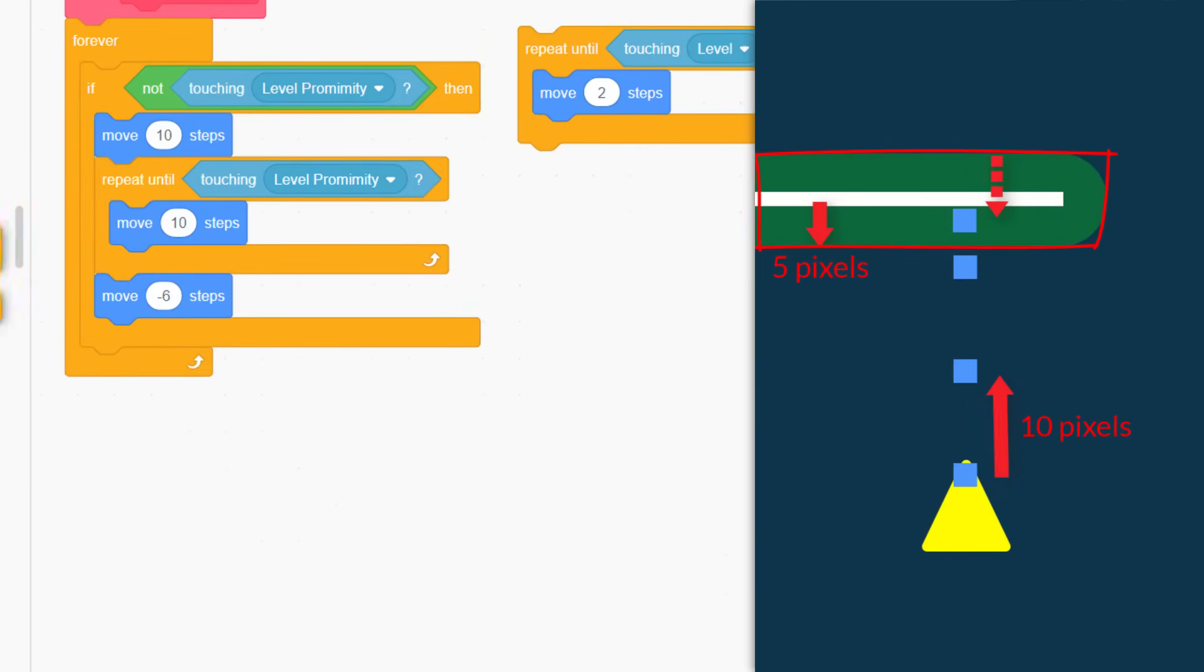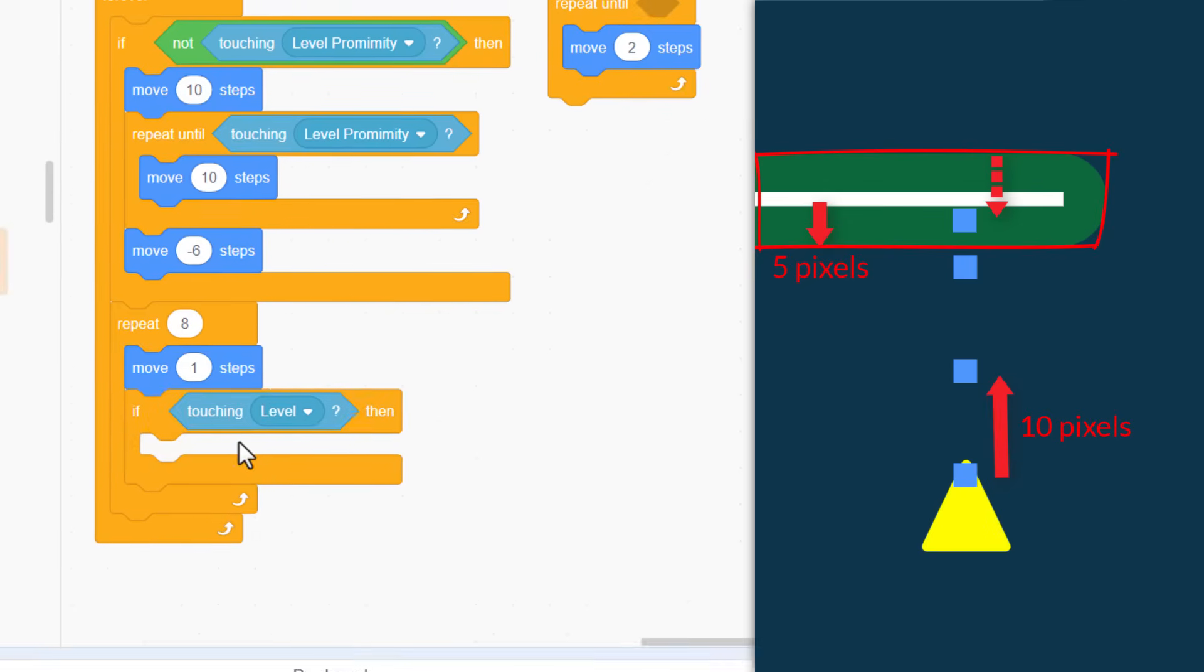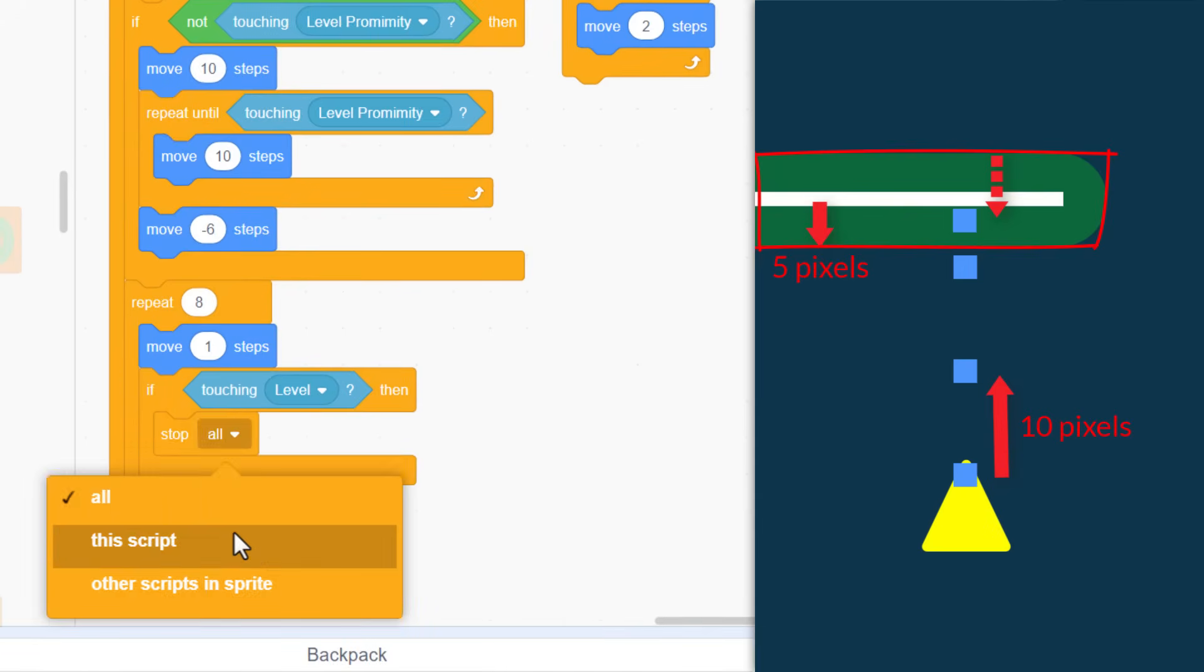But we must remember it's possible we won't find a wall. We could just be passing by, so we'll repeat for a fixed number of tries. Say 8 times. Each time we move forward, we move by just one step. Then check if we are touching the real level sprite. And if we are, then splendid! We want to stop this script. We are done.